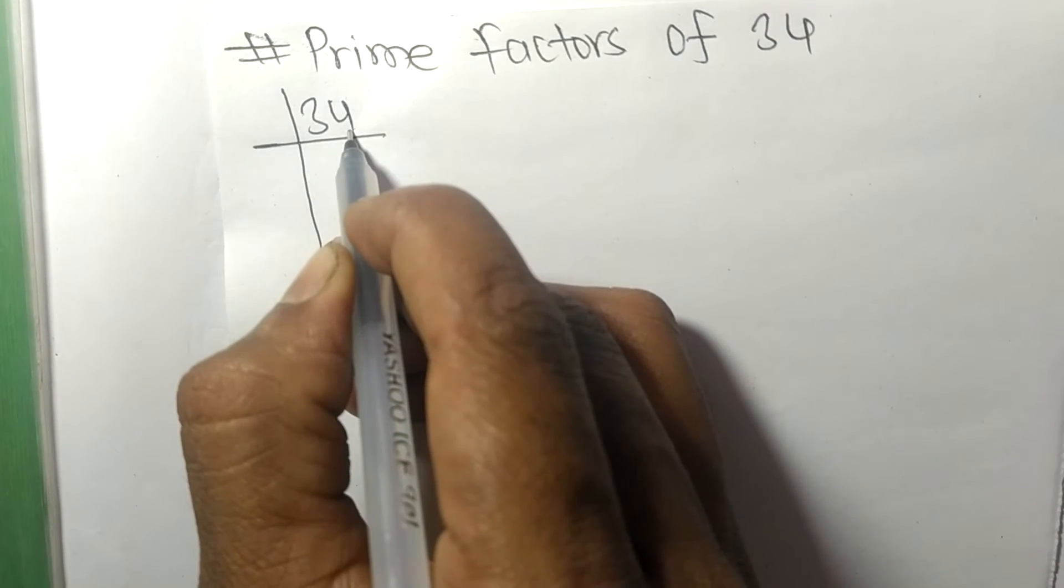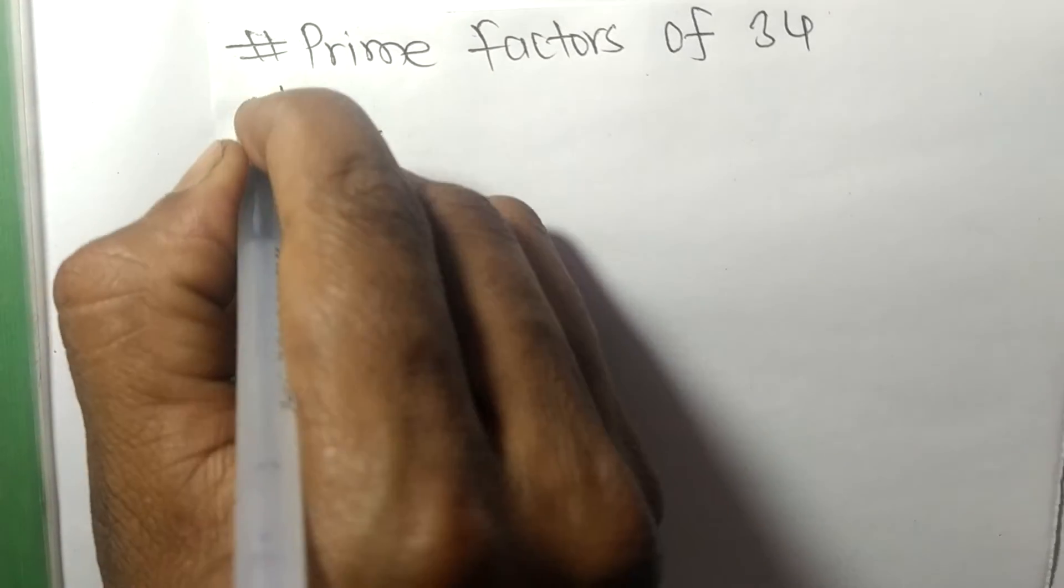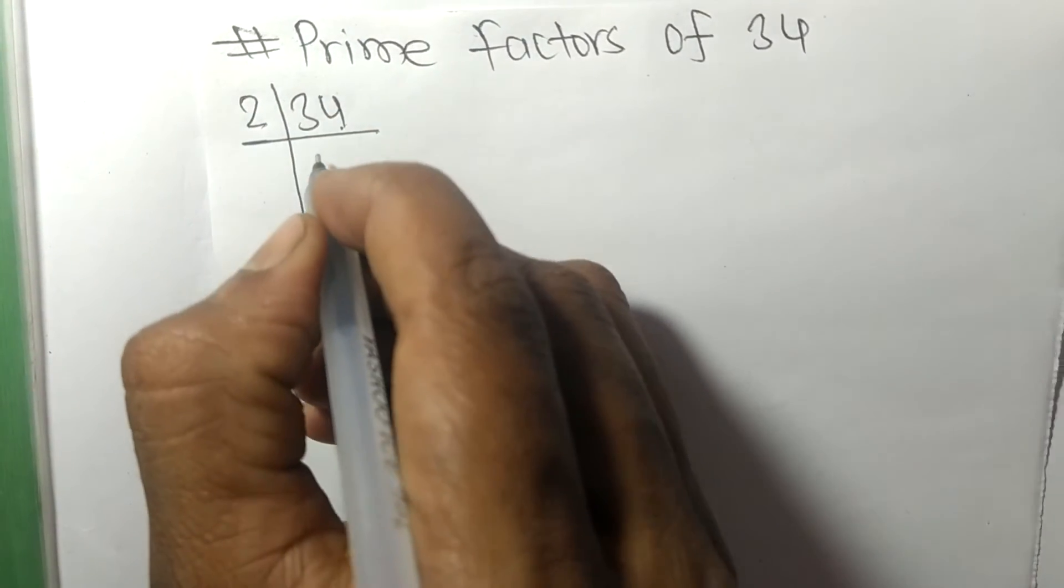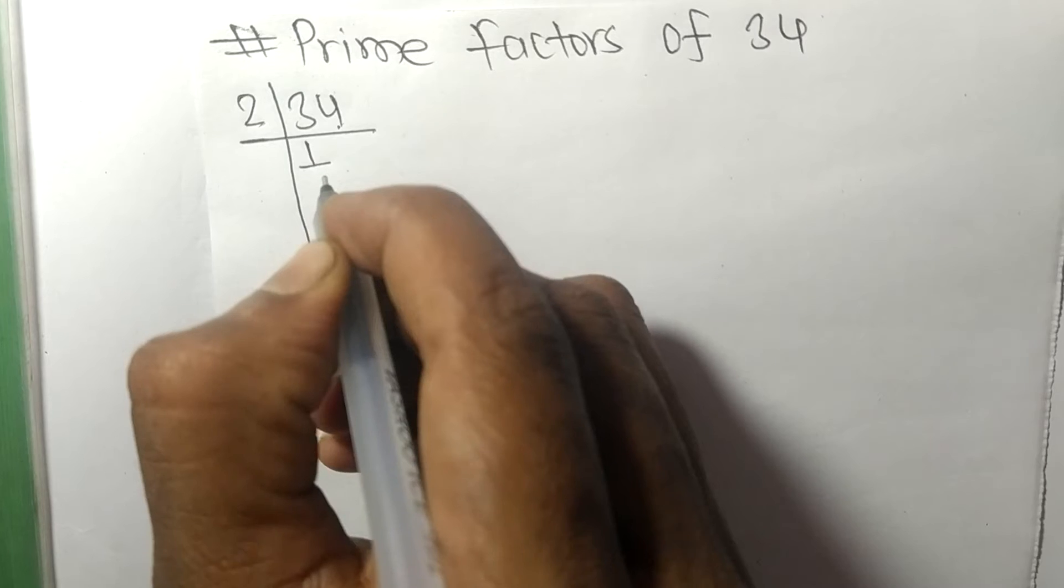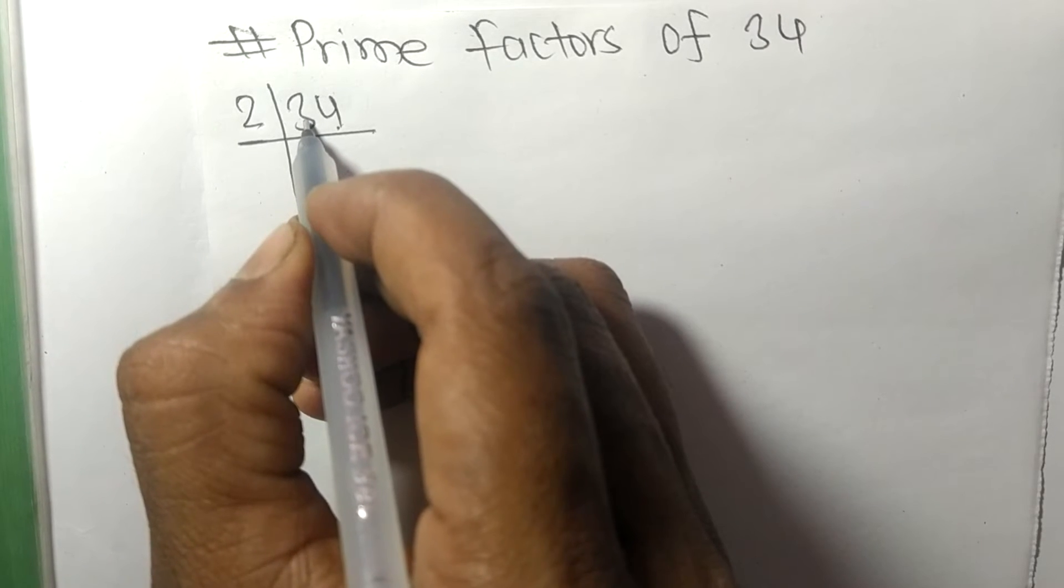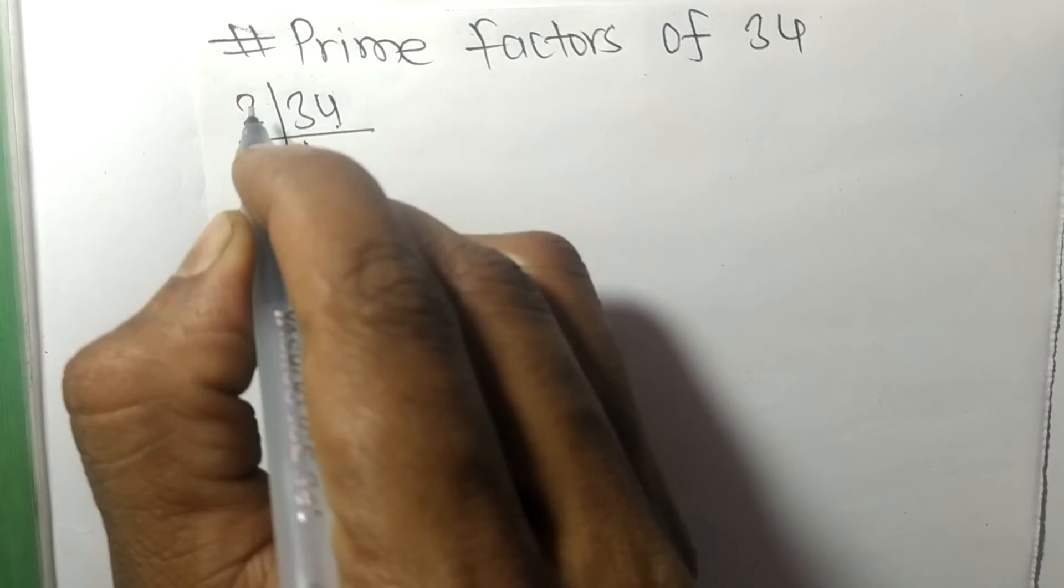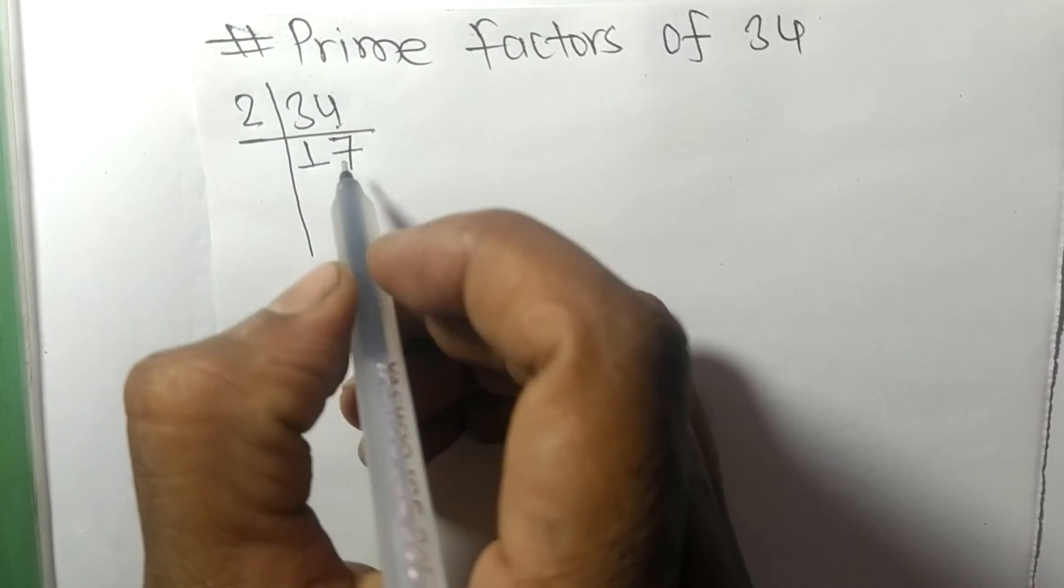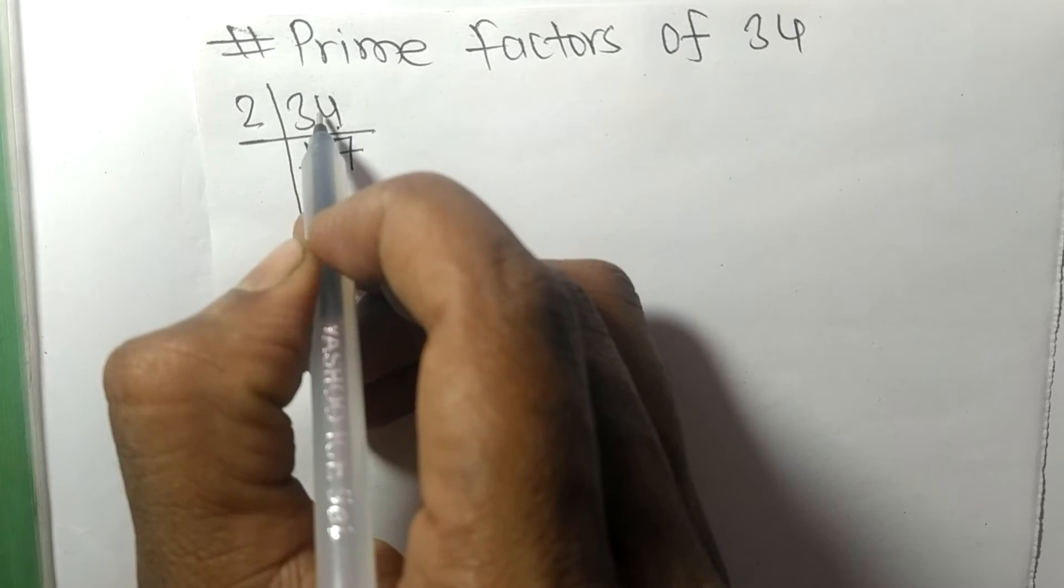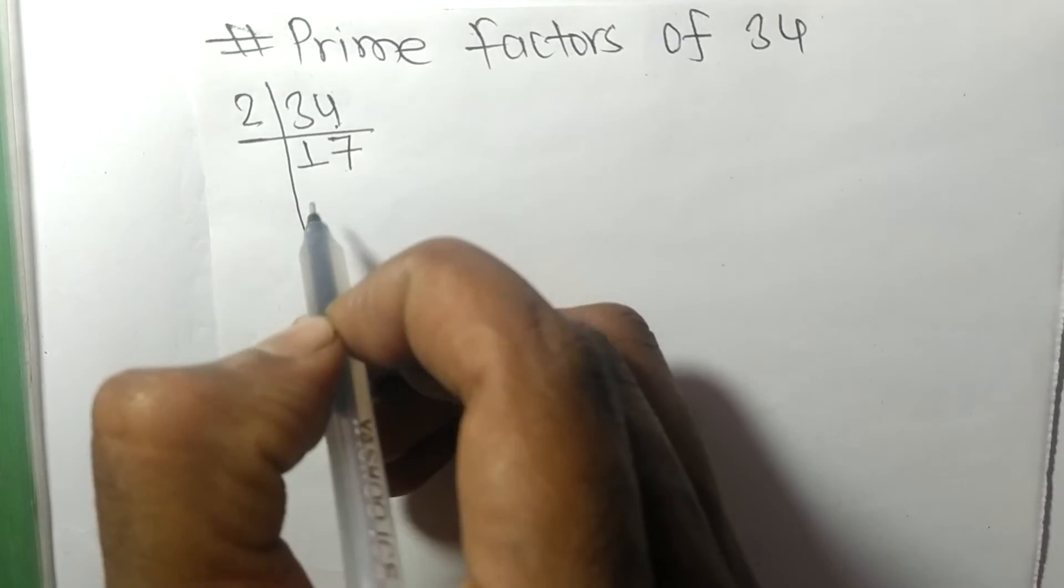2 times 17 equals 34, and remaining here 14. So 14 divided by 2 we get 7. 34 on dividing with 2 we get here 17.